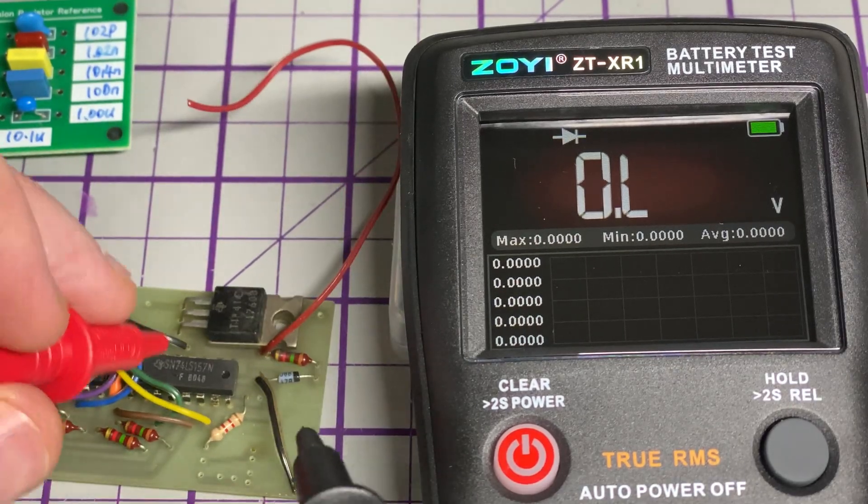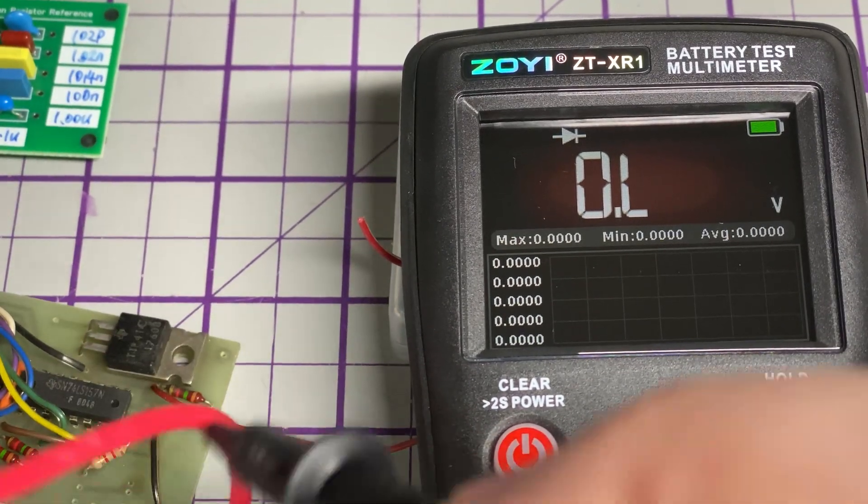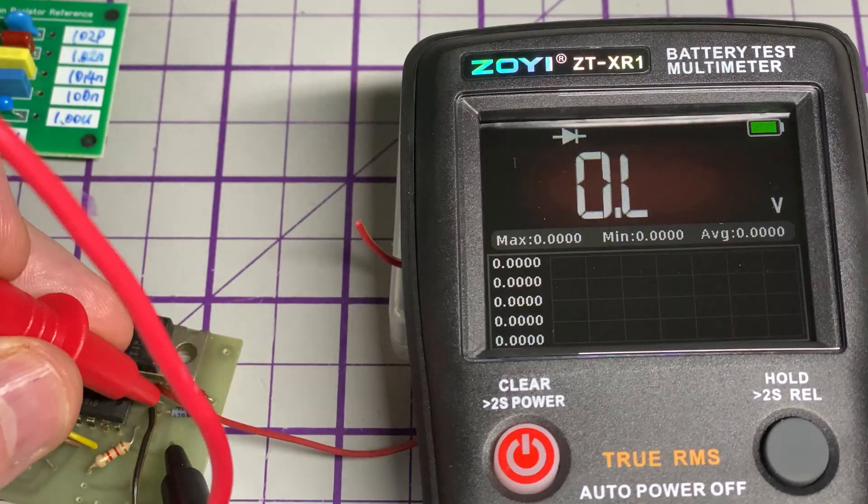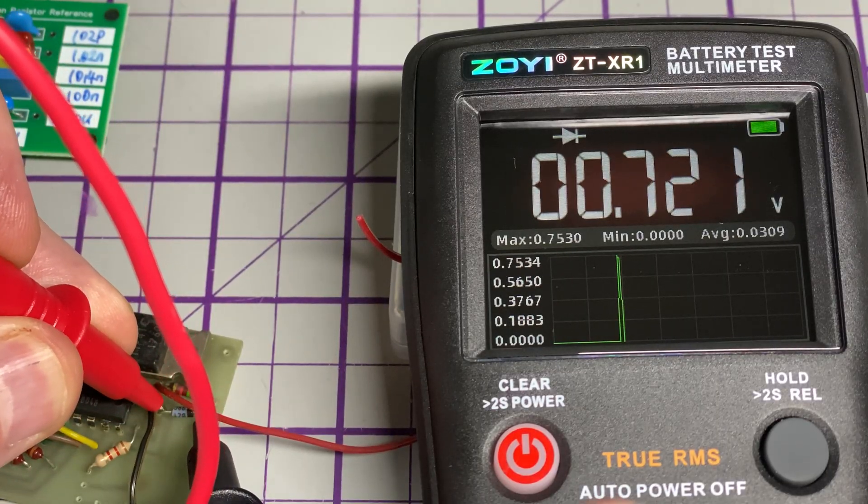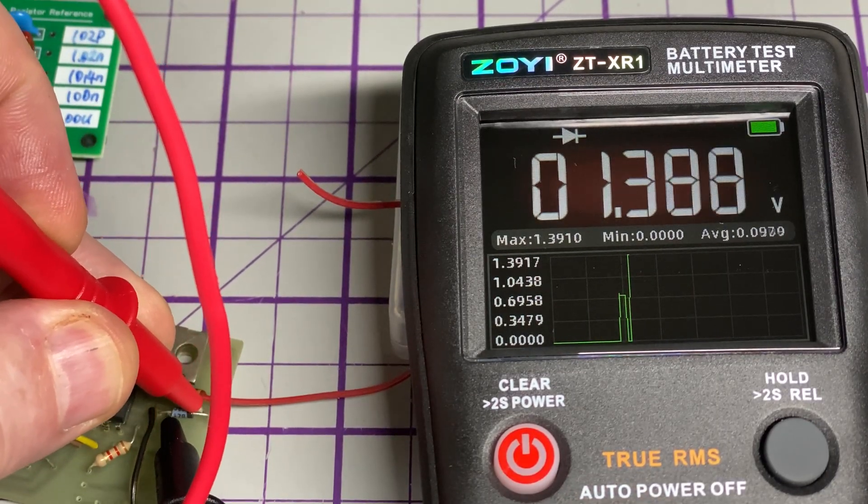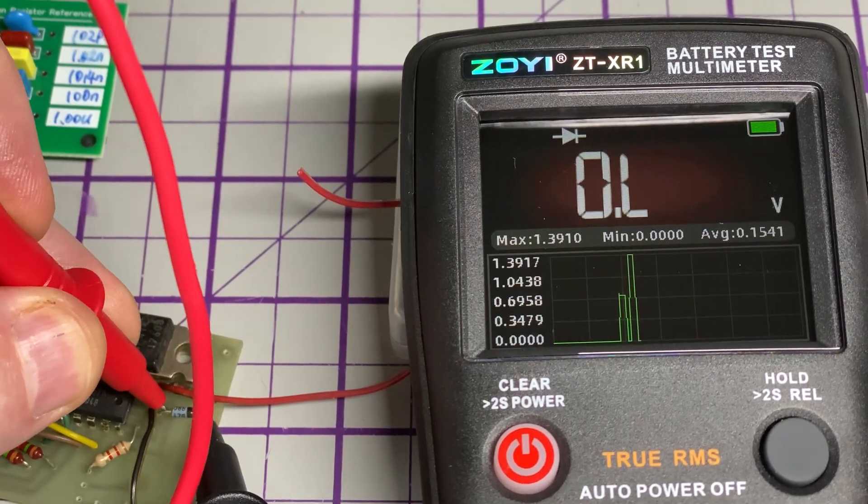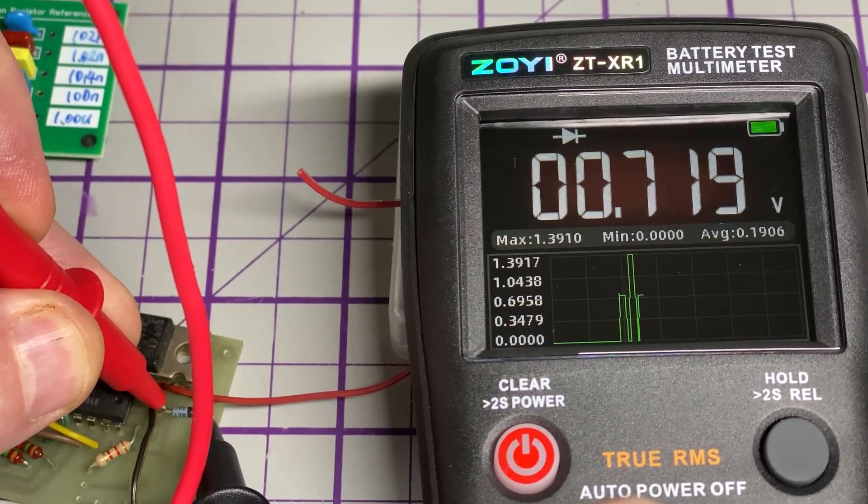Diode test. We're just testing a random diode on a board. Yep, tested. It had no problem. It's got something across it so it reads the other way, but there's the forward. That's fine, diode test works.